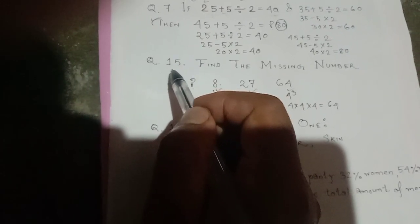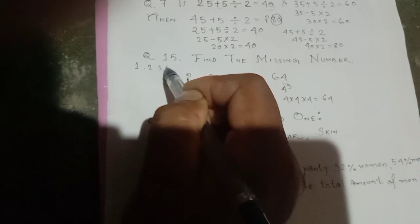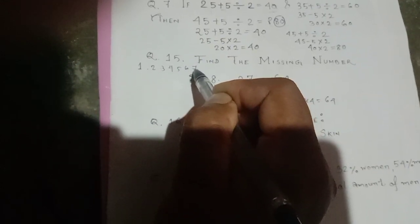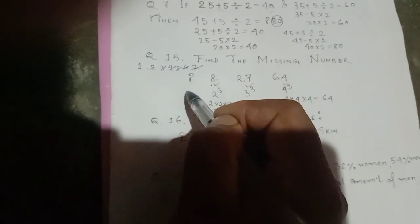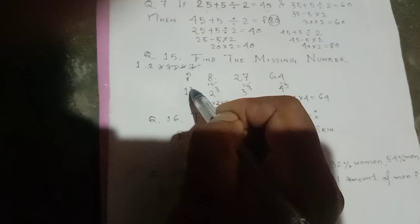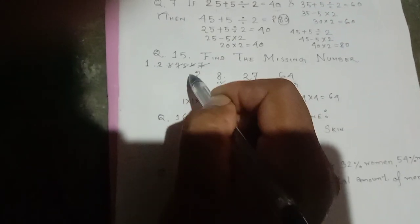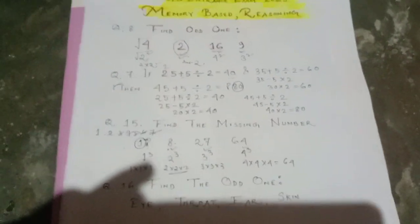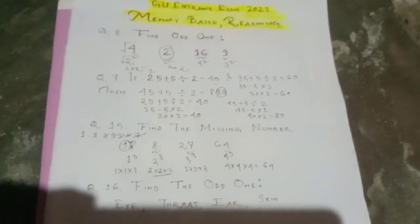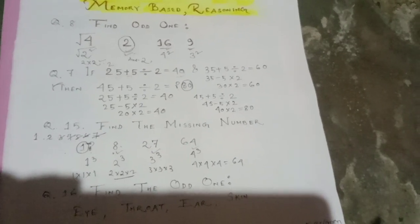Counting the cubes in the series: 1, 2, 3, 4, 5, 6, 7 — we find we do not have the cube of 1. So the missing number is 1 cubed, which is 1 into 1 into 1 equals 1. The answer is 1.